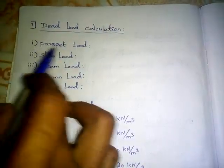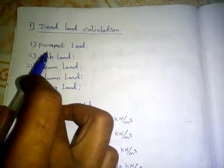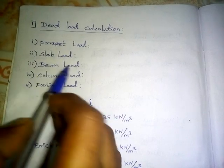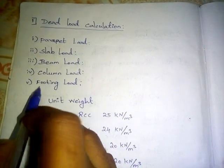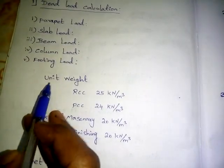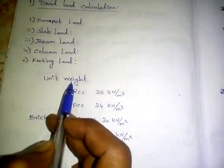First, dead load calculation. What is dead load? Dead load includes parapet load, slab load, beam load, column load, and footing load. What is the unit weight?